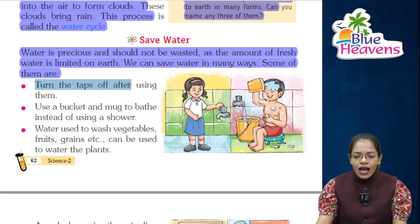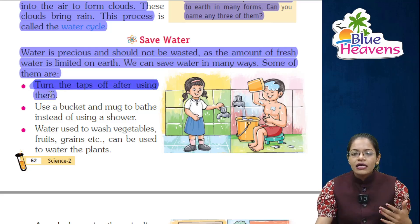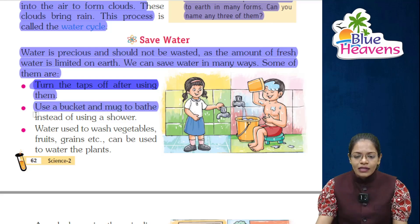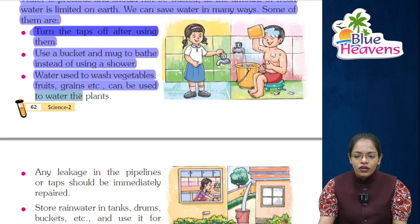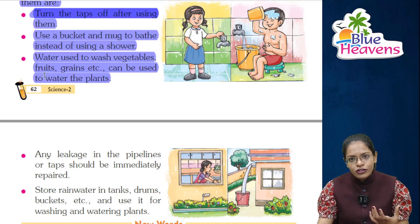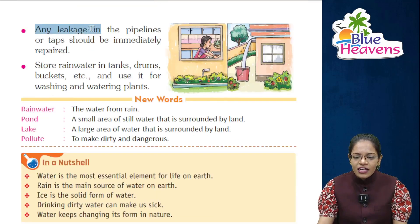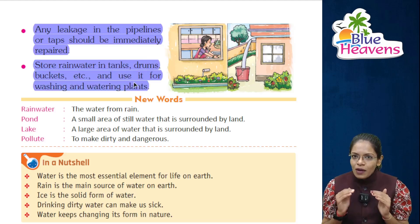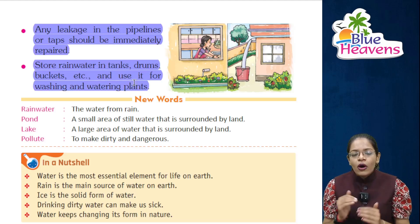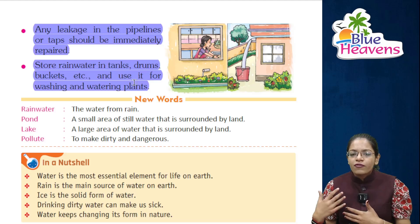First point: turn the taps off after using them. Second: use a bucket and mug to bathe instead of using a shower. Water used to wash vegetables, fruits, and grains can be reused to water plants. Any leakage in pipelines or taps should be immediately repaired. Store water in tanks, drums, and buckets and use it for washing and watering plants.